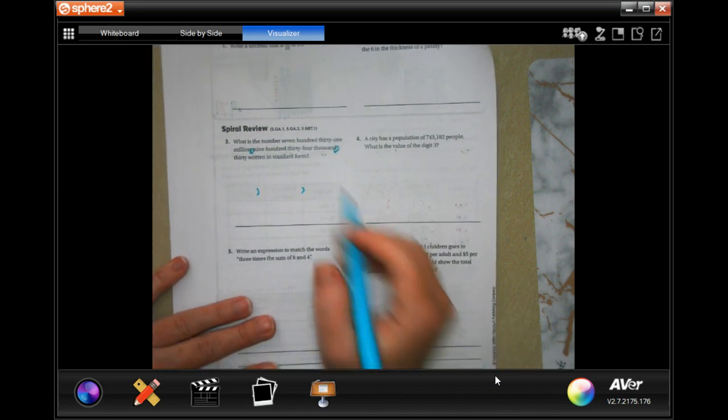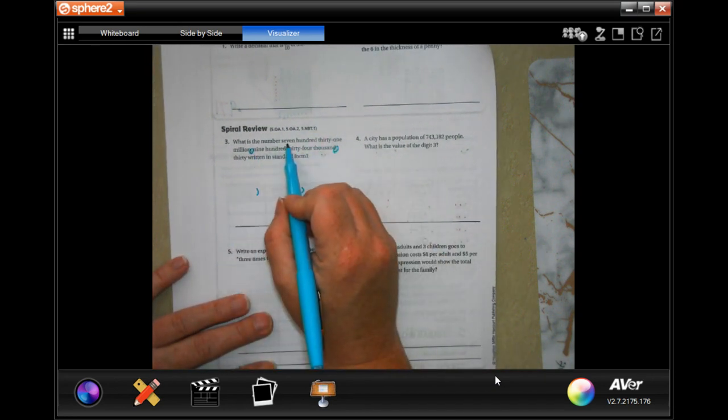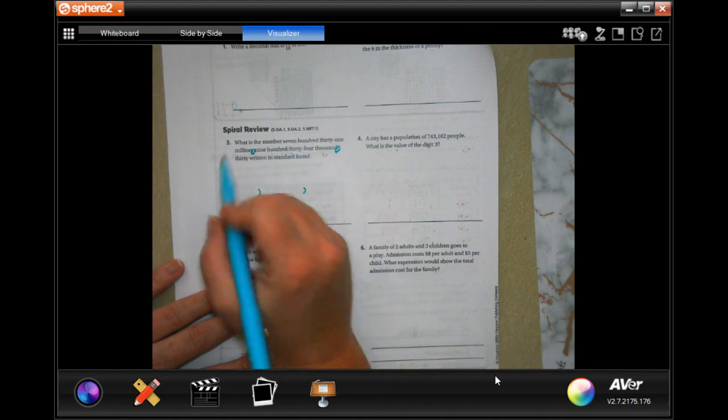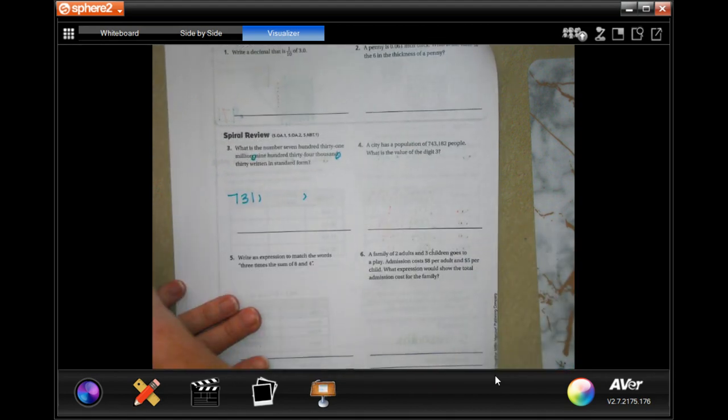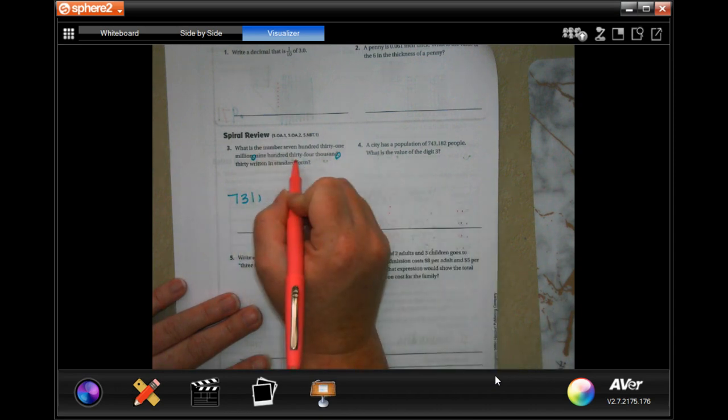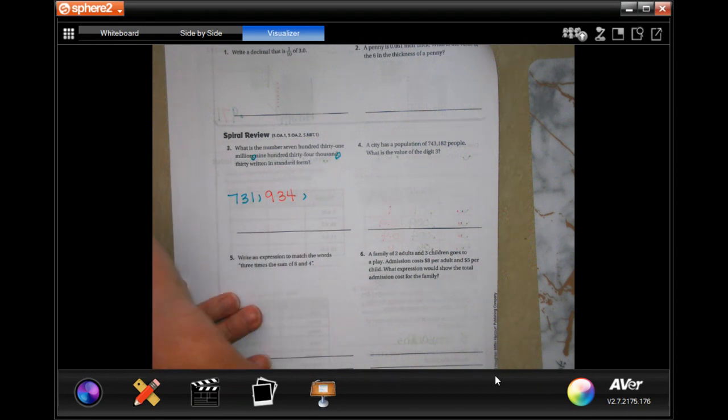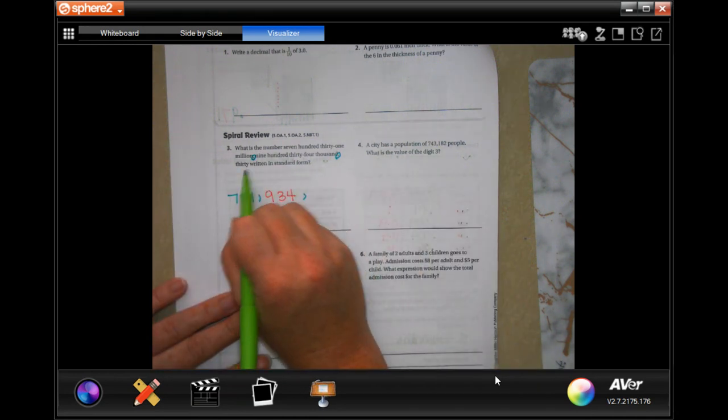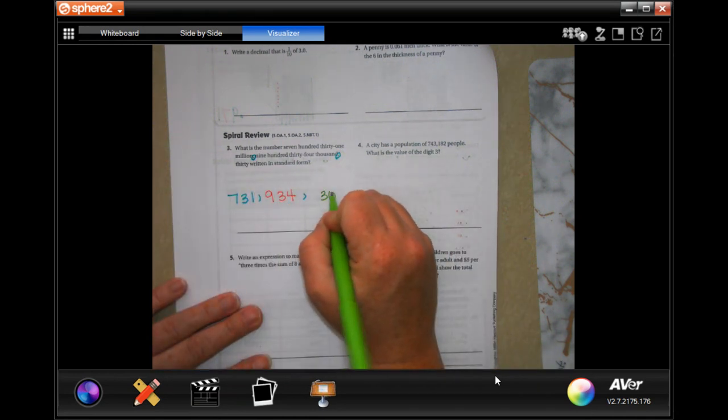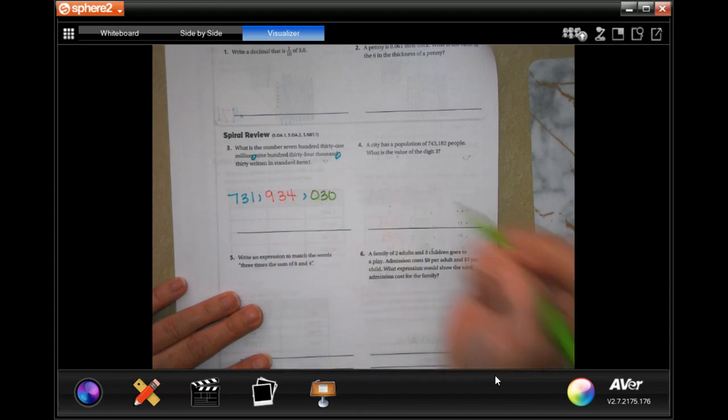So before the first comma it's seven hundred and thirty one million: seven thirty one. After the second one, nine hundred and thirty four thousand and thirty - well I still need a number there, I'm going to fill in a placeholder zero.